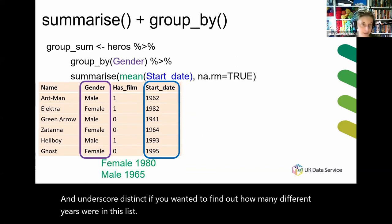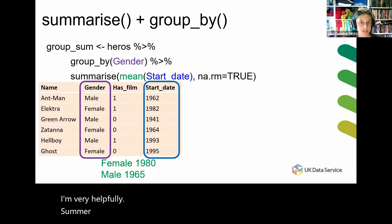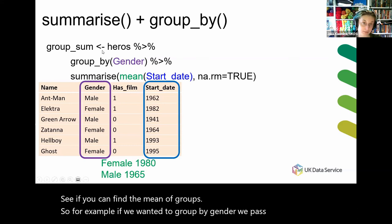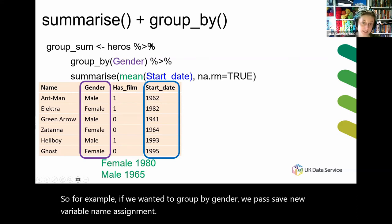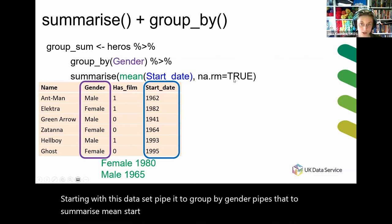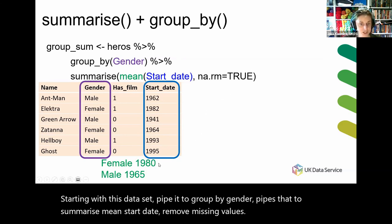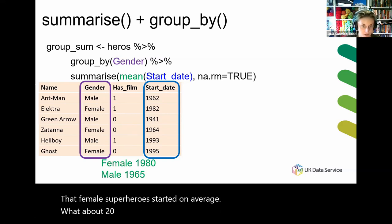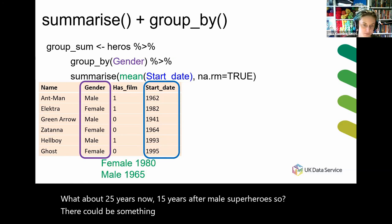Helpfully, summarize can be combined with group_by so that you can find the mean of groups. For example, if we wanted to group by gender, we assign a new variable name, start with the dataset, pipe to group_by gender, then pipe to summarize mean start date with na.rm to remove missing values. That shows us that female superheroes started on average about 15 to 25 years after male superheroes — so there could be something there, or it could just be coincidence.